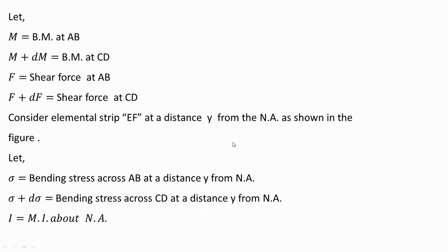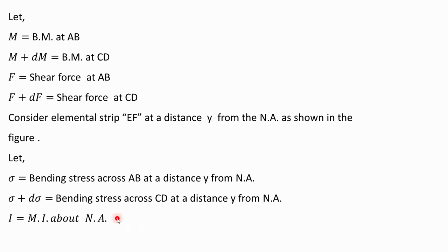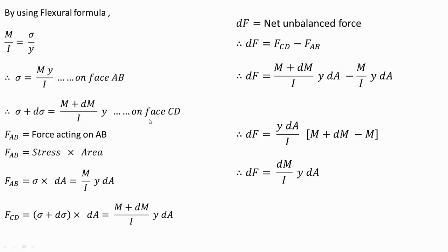Now let us use the flexural formula to derive the expression. The various terms used are: M is the bending moment at face AB; M plus dM is the bending moment at CD; F is the shear force at AB; F plus dF is the shear force at CD. We have considered an elementary strip EF at a distance Y from the neutral axis. Sigma is the bending stress induced at section AB, and sigma plus d-sigma is the bending stress at CD at distance Y from the neutral axis. I is the moment of inertia about the neutral axis, that is Ixx, equal to (1/12)bd³ for a rectangular section.